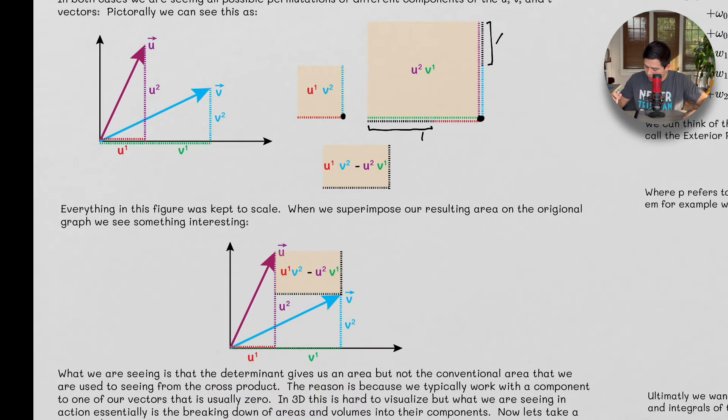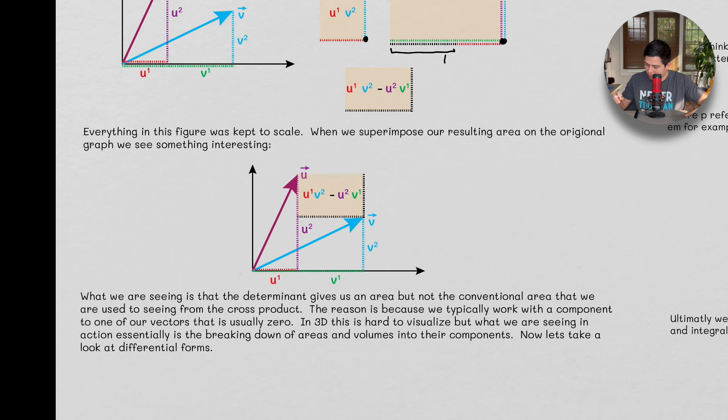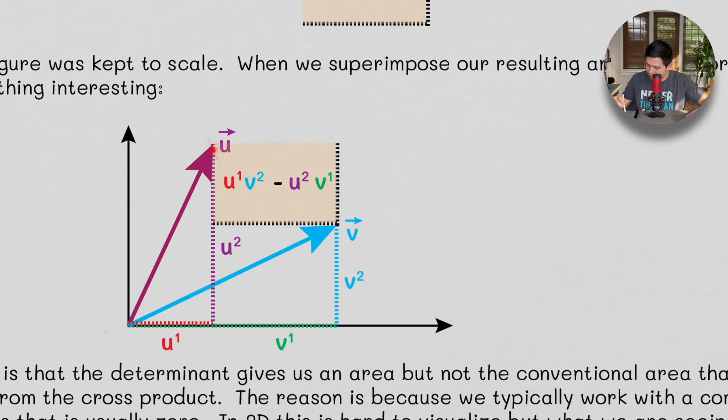Now, if we, again, I copy-pasted this, I didn't change the dimensions of anything. Everything in this figure was kept to scale. And so when we superimpose the result, we can see something interesting. That the result fits between the point here on this vector and the point here on this vector.